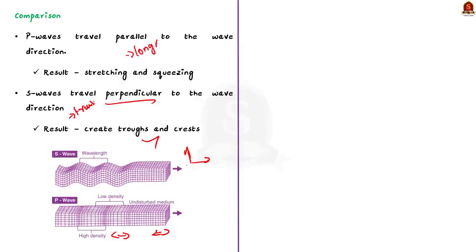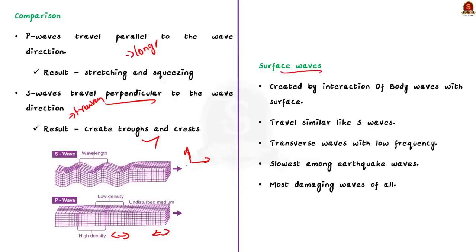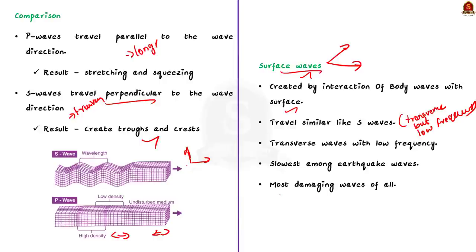The next type is surface waves. Body waves interact with surface rock and generate a new set of waves called surface waves. These waves move along the earth's surface and are transverse like S waves but have lower frequency. Surface waves are the slowest among earthquake waves and are recorded last on the seismograph, but they are the most damaging waves of all. Surface waves are divided into Rayleigh waves and Love waves.